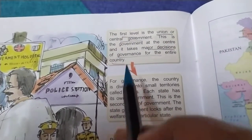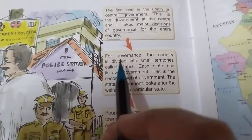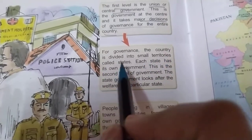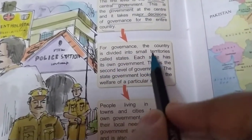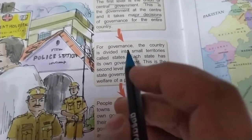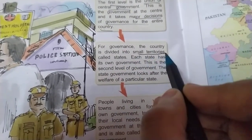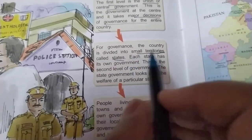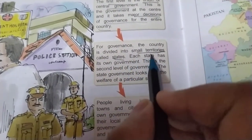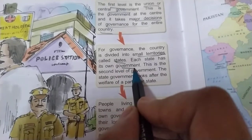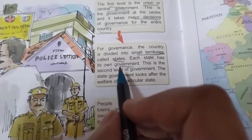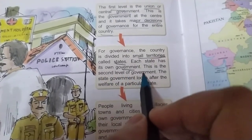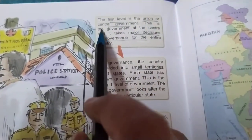For governance, the country is divided into small territories called states. In order to look after the whole country, our country is divided into small territories generally known as states. Each state has its own government. States are the second level of government; the first is the Union or Central Government.